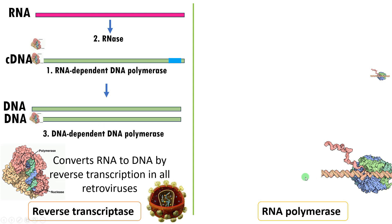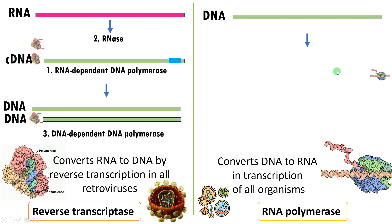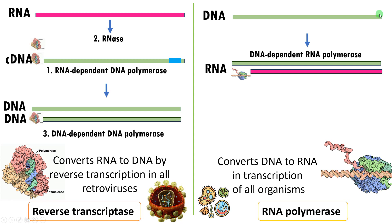Now let us see RNA polymerase. RNA polymerase converts DNA to RNA in transcription, occurring in all organisms. This RNA polymerase synthesizes an RNA from a DNA template, so RNA polymerase is a DNA-dependent RNA polymerase. Here it does not require a primer to initiate the reaction.